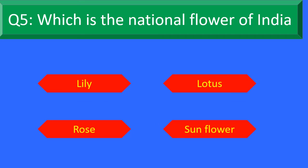Which is the National Flower of India? Option A: Lily, Option B: Lotus, Option C: Rose, and Option D: Sunflower.